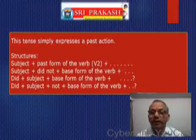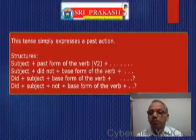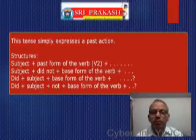Assertive negative: Subject plus did not plus base form of the verb. Interrogative positive: Did plus subject plus base form of the verb. Interrogative negative: Did plus subject plus not plus base form of the verb.